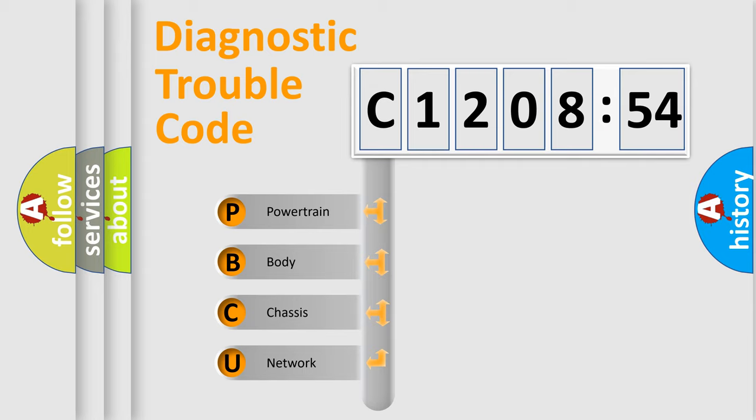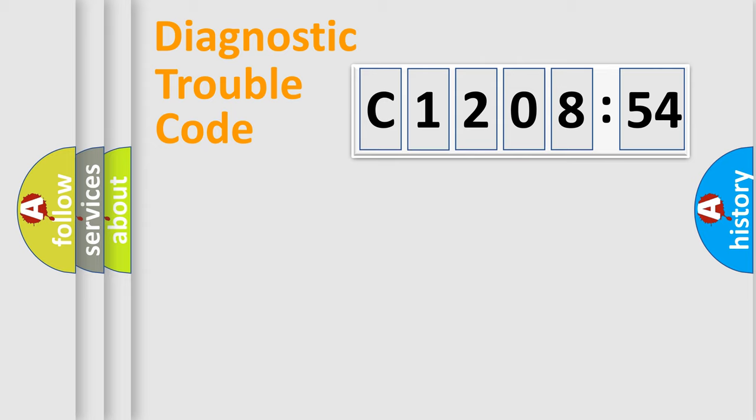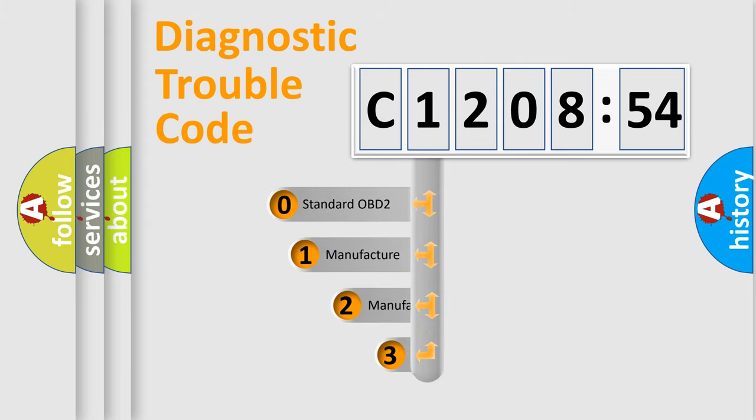We divide the electric system of automobile into four basic units: Powertrain, Body, Chassis, Network. This distribution is defined in the first character code.